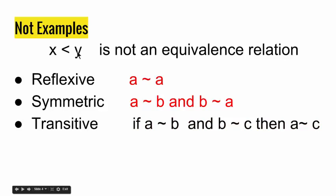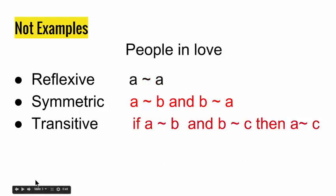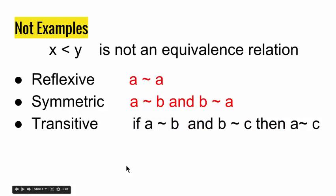Also, X greater than Y is not an equivalence relation because A is never greater than itself, so it fails reflexivity right away. If A is greater than B, then B will not be greater than A, so it also fails symmetry. However, it does not fail transitivity: if A is greater than B and B is greater than C, then A is greater than C. So these two examples are sets that don't have equivalence relation.